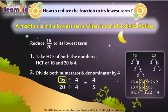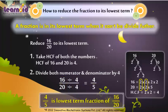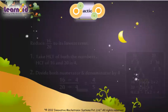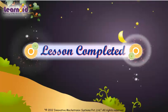16 divided by 4 is 4. 20 divided by 4 is 5. So 4 by 5 is the lowest term of the fraction 16 by 20.